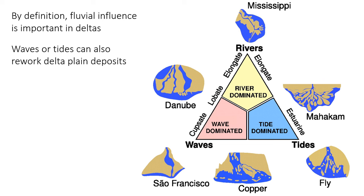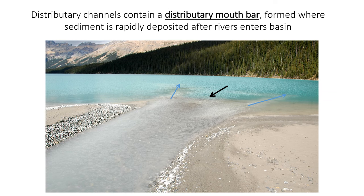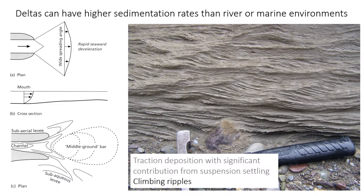In a delta, the river typically branches into multiple channels called distributary channels, and sand is deposited as a bar at the mouth of each of those called a distributary mouth bar. There's a lot of complexity in these bars from the density contrast of the water, the frictional interaction, and the fluvial discharge, but the key feature of distributary mouth bars is the rapid deposition of large amounts of sediment because the river water rapidly slows down when it hits the standing ocean or lake water. Mouth bars form primarily from unidirectional flow, so they can contain dunes and ripples, but the rapid deposition also means you might see climbing ripples in the mouth bar.